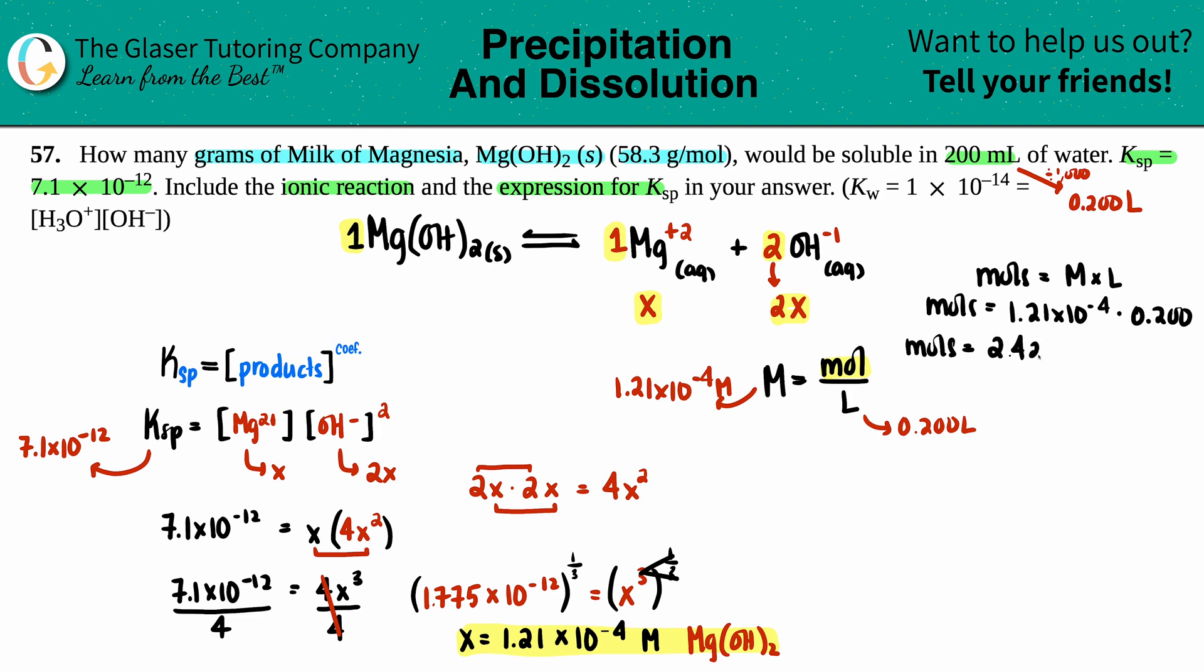Let's see what we get. Moles equals 1.21 times 10 to the negative fourth times 0.2, which gives 2.42 times 10 to the negative fifth, and that's moles of my milk of magnesia, Mg(OH)₂. How do I go from moles to grams? That's easy. Moles to grams of Mg(OH)₂, you always multiply by the molar mass. How nice, they gave it to us.